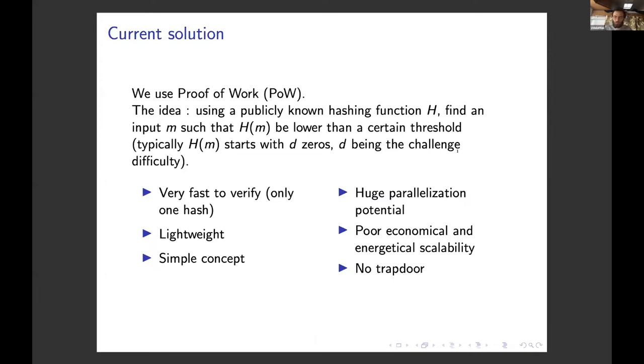The problem is that it is very fast to verify, only one hash, typically one microsecond. It's lightweight and simple to implement with a few hundred bits overhead. But it has huge parallelization potential. If you get one thousand machines, you can have one thousand times more hashing power. This is a major challenge in the blockchain area, especially for Bitcoin, regarding this race to mining.